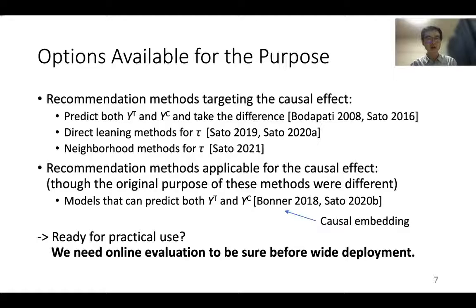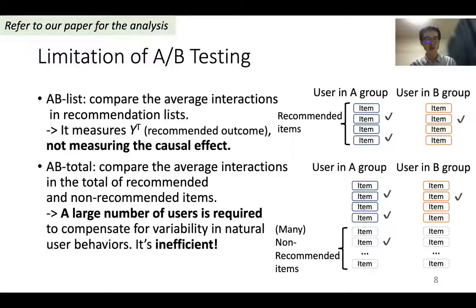To pursue the causal effect of recommendations, several methods are already available. There are recommendation methods targeting specifically for the causal effect, and other recommendation methods are applicable for the causal effect purpose. So, are we ready for practical use of them? Not yet. We need online evaluation to be sure about their actual benefits before we widely deploy them in our service. You might wonder, we can simply conduct A-B testing. However, evaluating the causal effect is not so easy.